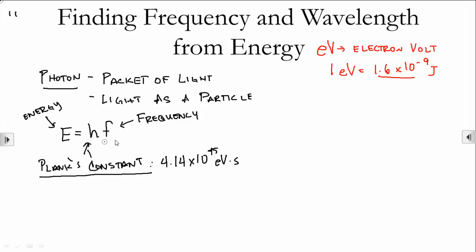This is how we use that. Each frequency of light corresponds to a different color or a different range of things. We don't always talk about light in terms of frequency though — sometimes we talk about light in terms of wavelength. If we remember that V equals frequency times wavelength and plug that in, and we remember that the speed of light is a constant: 3 times 10 to the eighth meters per second.